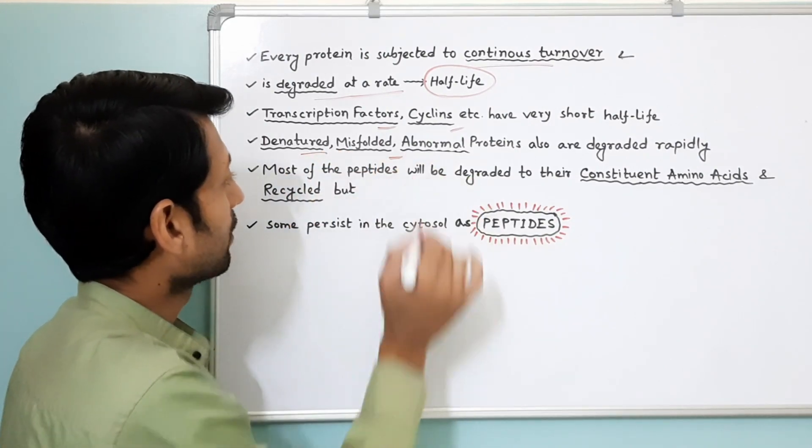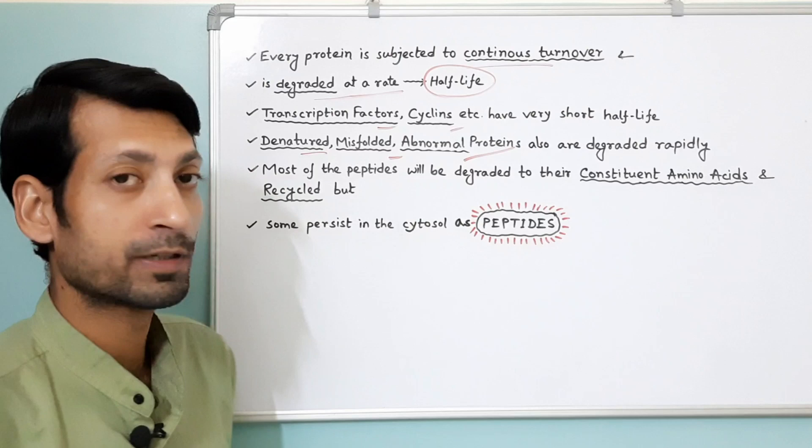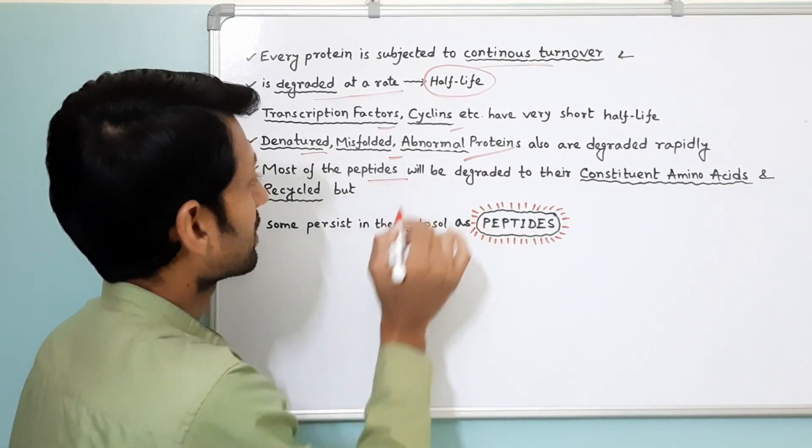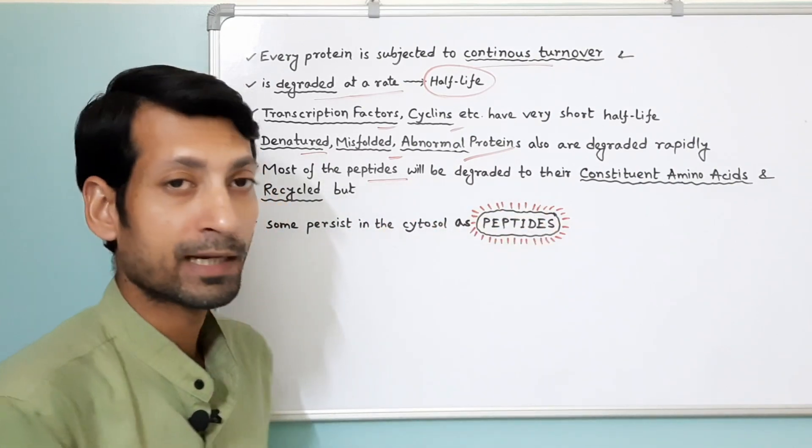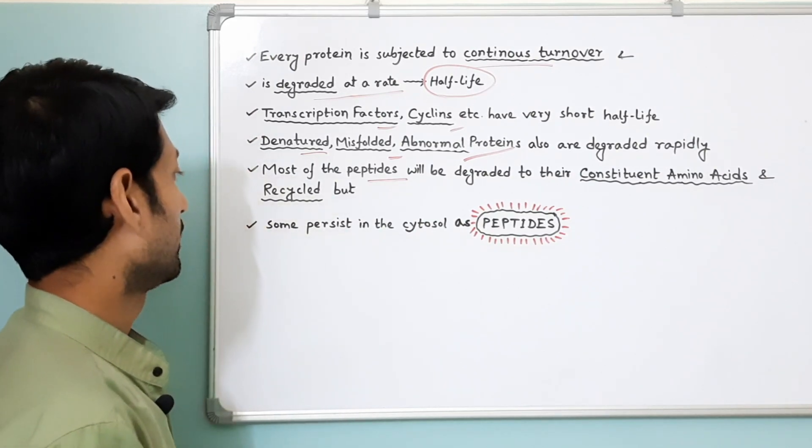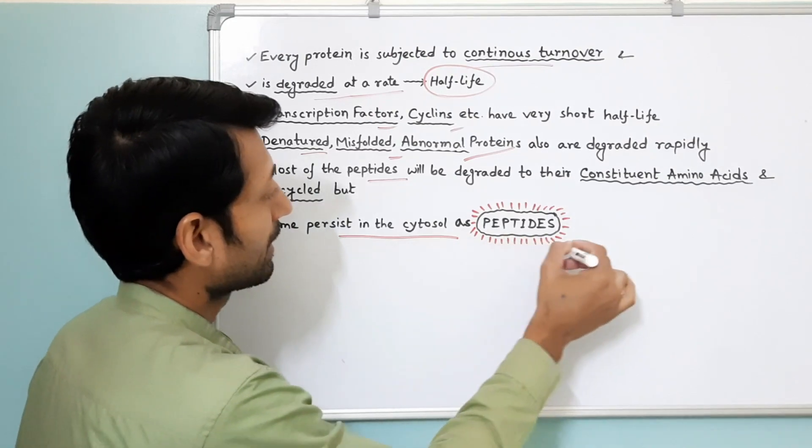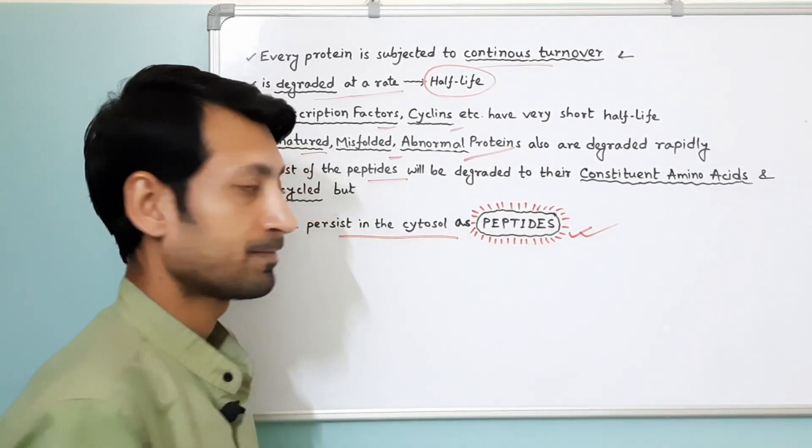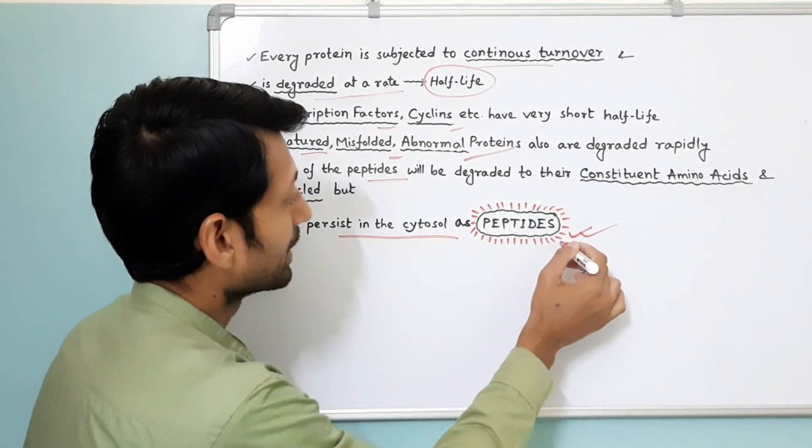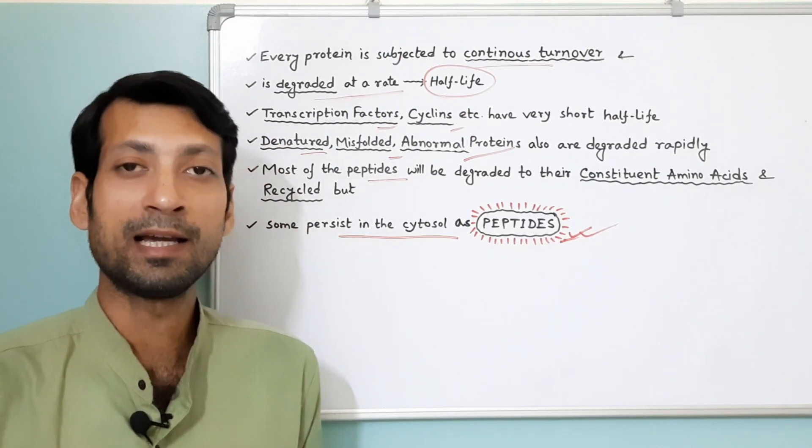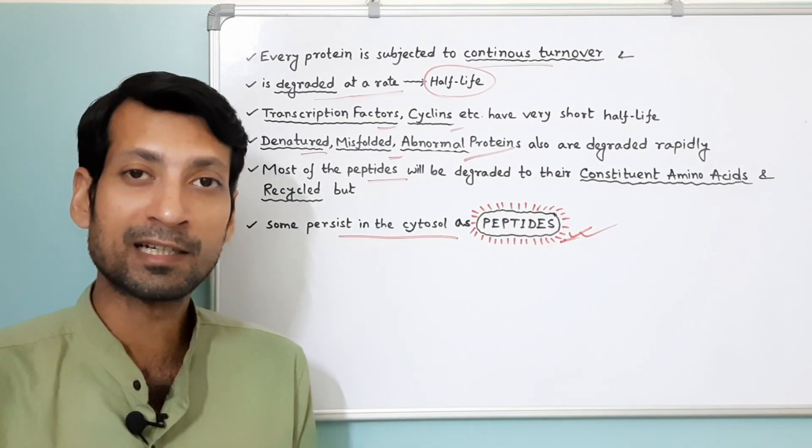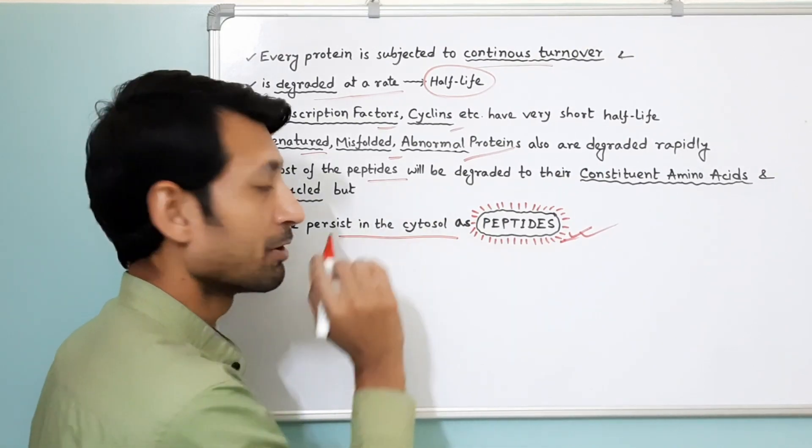Denatured, misfolded, abnormal proteins are also degraded rapidly. Most of the peptides will be degraded to their constituent amino acids and recycled. But some persist in the cytosol as peptides. So the cells display these peptides on their surface via class 1 MHC molecules for final degradation by the immune cells.